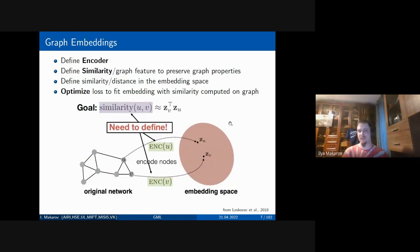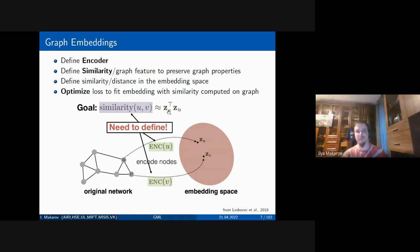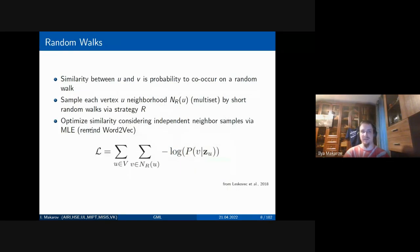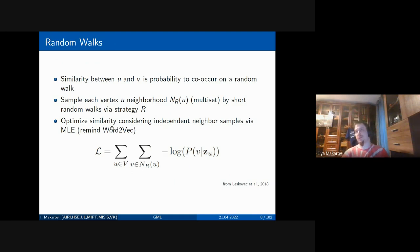The whole process of network vectorization is defined as follows: we need an encoder mapping a node to its numerical vector representation, we define some similarity or graph features to be preserved, and this similarity should be optimized to be close to some function of the scalar product between vector representations. We then optimize a loss to fit embeddings with similarity computed on graphs. Ideas using random walks — such that similarity between two nodes equals the probability of co-occurrence on random walks — arose in 2016 in works by Leskovec et al., starting the popularity of graph embedding techniques.